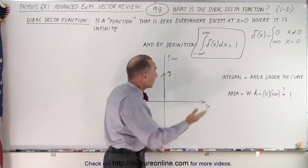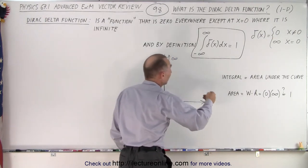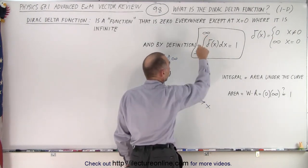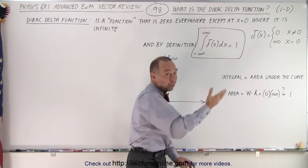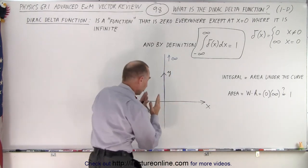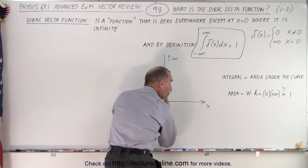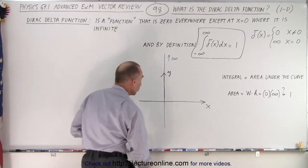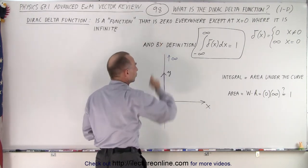We really don't need to go all the way to negative and positive infinity. We can integrate from -1 to 1, or -0.1 to +0.1, or from minus a millionth to plus a millionth. It doesn't matter, as long as we include the one point at the origin where the Dirac delta function is infinite.